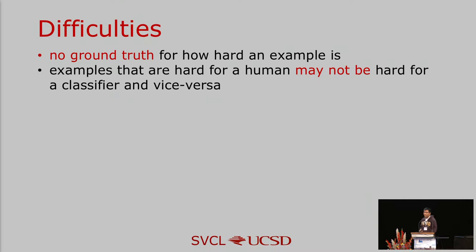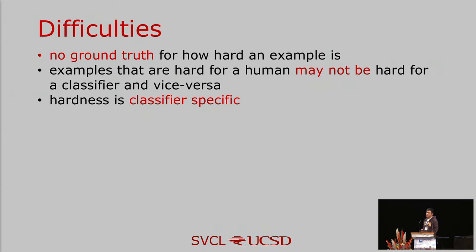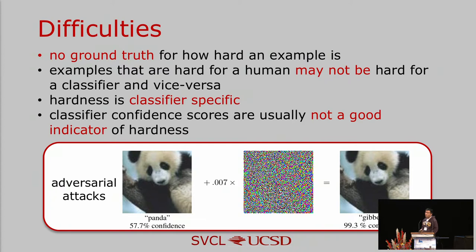However, estimating how hard each example is is not a trivial problem. The main challenge is that there is no ground truth for hardness. Although human annotation is available, examples that are hard for humans may not be hard for computers, and vice versa. Another challenge is that hardness criteria should be classifier-specific. For example, for musicians, distinguishing music scales is easy, but for most people it's very hard.